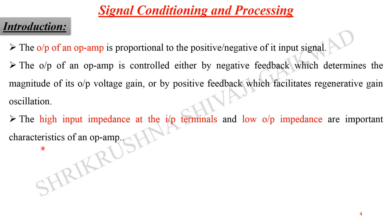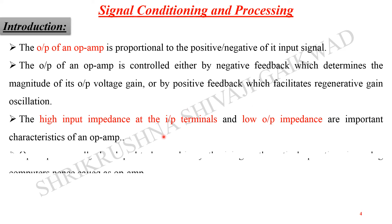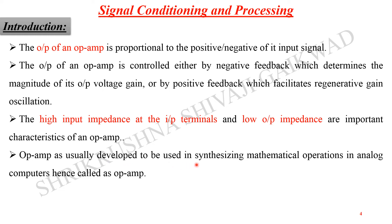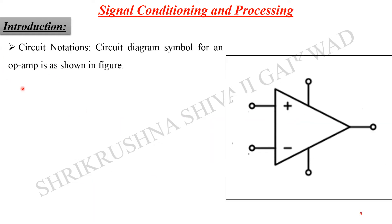The high input impedance at the input terminals and the low output impedance are the most important characteristics of the operational amplifier. Ideally it has infinite input impedance, so that any circuitry can drive it with zero current. It also ideally has zero output impedance, so it can drive infinitely many circuits attached to it. This operational amplifier was originally developed to synthesize mathematical operations in analog computers, hence it is called an operational amplifier.